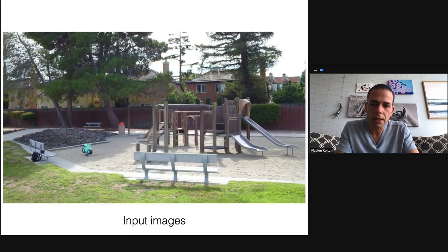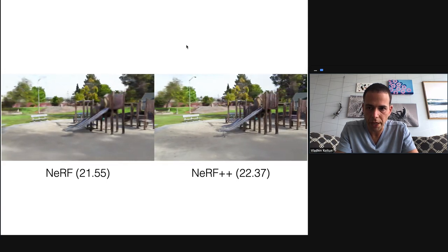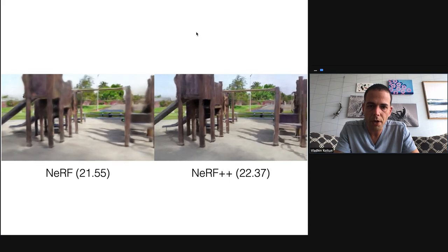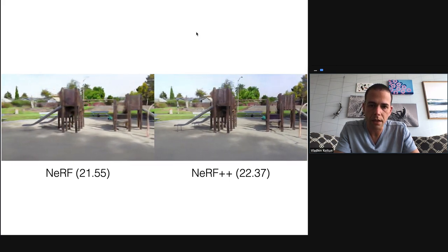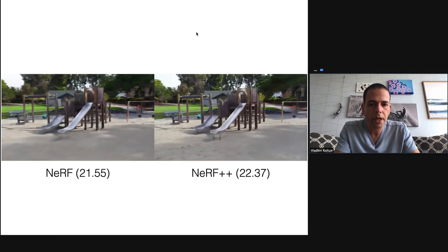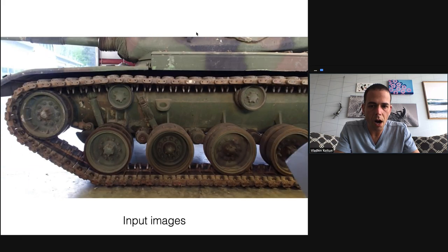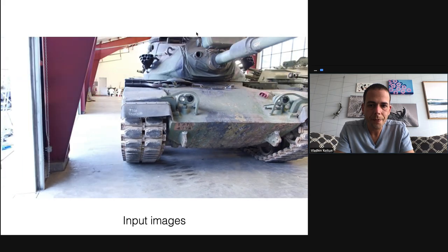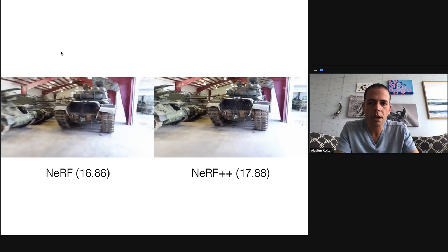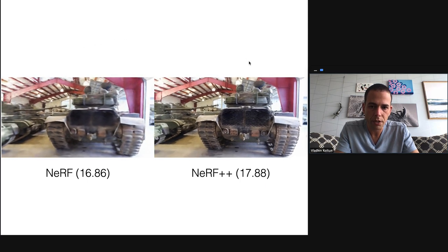Here is the playground scene — input images and the comparison of NeRF and NeRF plus plus. NeRF on the left is quite blurry; NeRF plus plus on the right is sharper both in the foreground and background. It's far from perfect photorealism, but really quite a bit better. Here is the M60 sequence — again the original NeRF is quite blurry though not a complete failure, and NeRF plus plus on the right is much closer, clearly quite a bit sharper and more realistic.